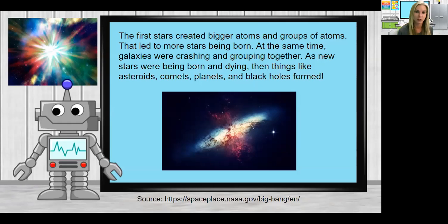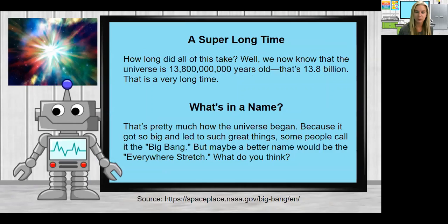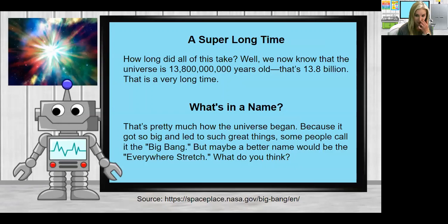Stars are still being born and dying, and asteroids, comets, planets, and black holes are still being formed. As for how long all of this took — we believe the universe is roughly 13 billion, 800 million years old. That's 13.8 billion years, which is a very long time.